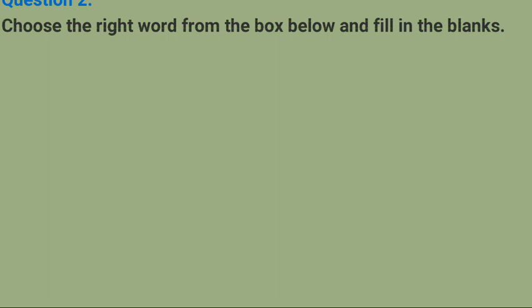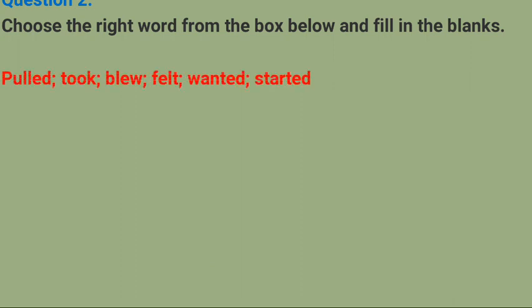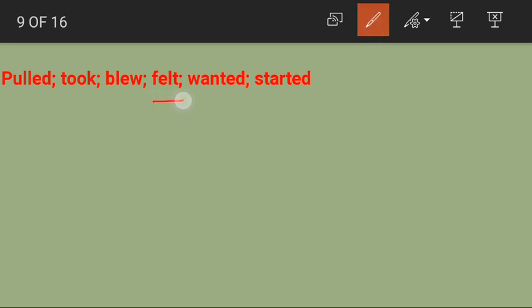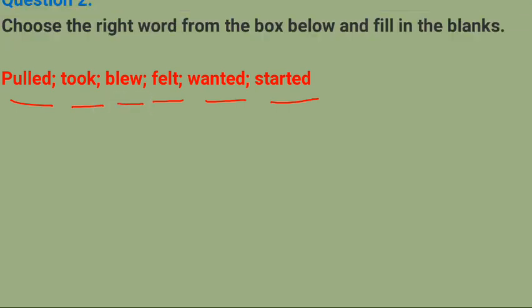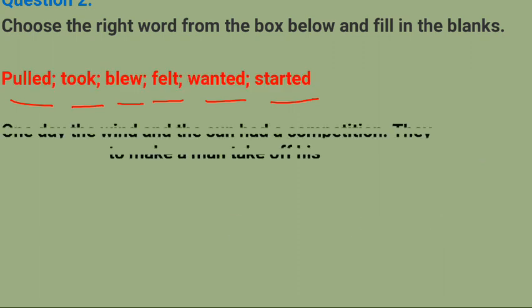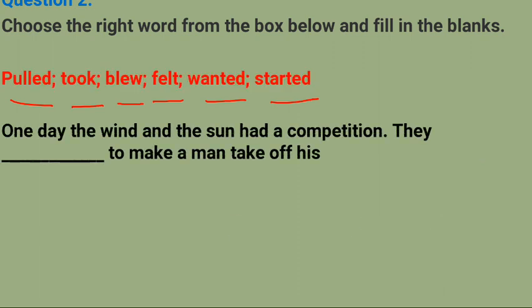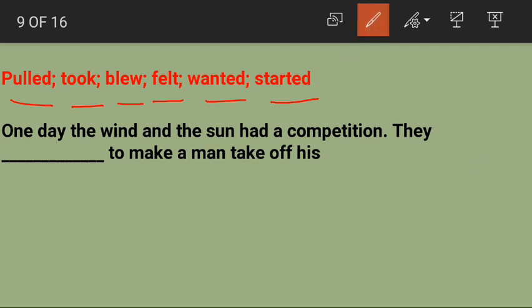Choose the right word from the box below and fill in the blanks. Words given: pulled, took, blew, felt, wanted, started. One day the wind and the sun had a competition — ek din wind aur sun ke beech competition tha. They wanted to make a man take off his coat — woh chahte the ki vyakti ka coat utar jaye. Answer: 'wanted.'